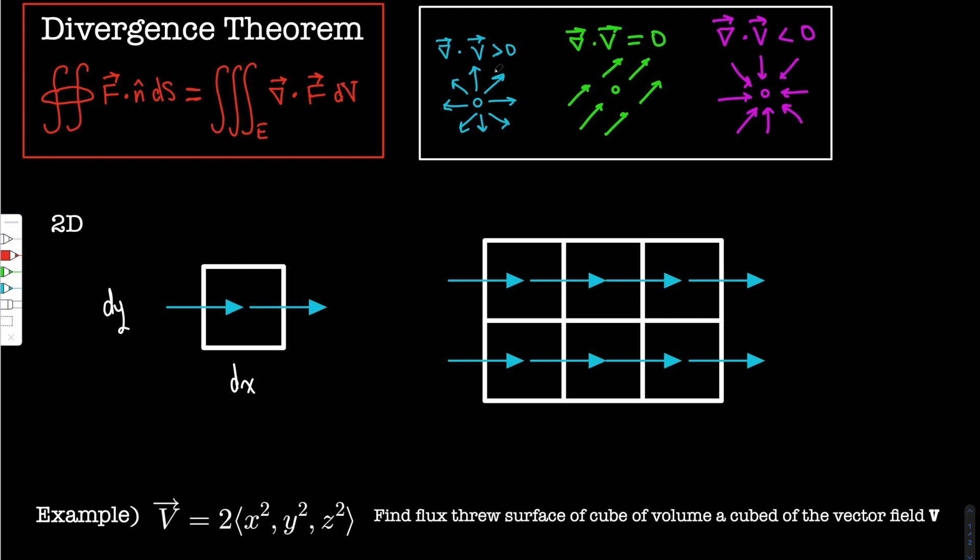So this is called a source. Basically the divergence is positive. You have some point, and you have some field leaving the point. Here you have basically these vector lines are the same as these. The same amount enters a point and leaves a point, and that's when the divergence is zero. This is a sink. The divergence is negative because it's entering the point.